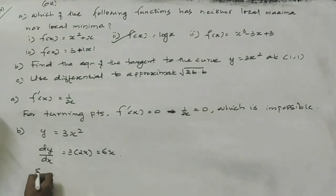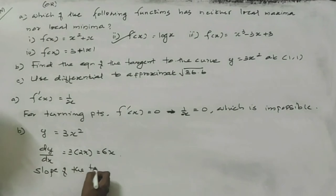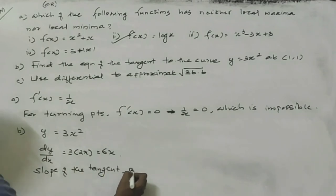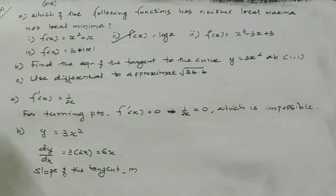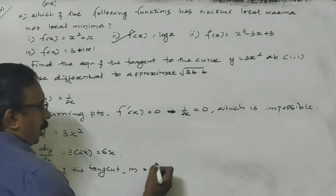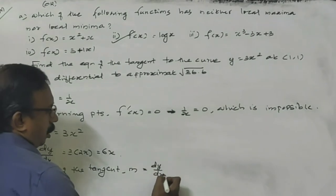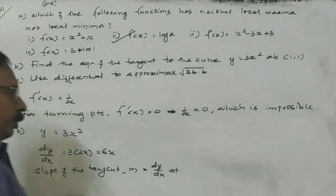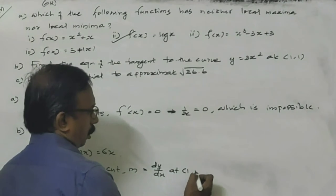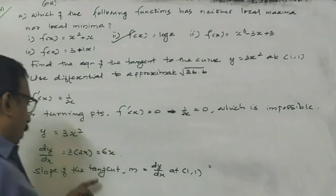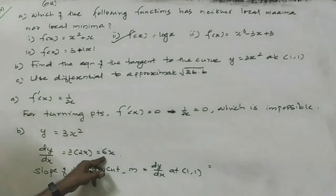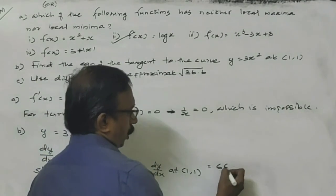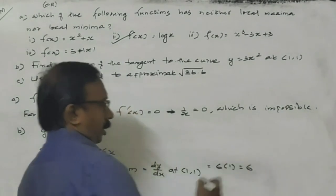Now, the slope of the tangent m equals dy/dx at the point (x1, y1). Here, the point is (1, 1). So dy/dx equals 6 into x equals 6 into 1, which is 6.